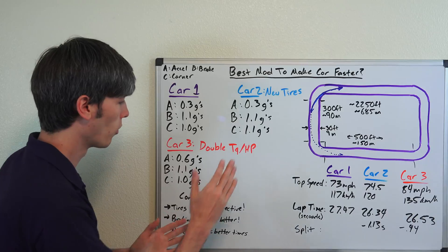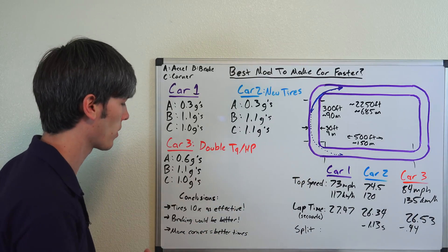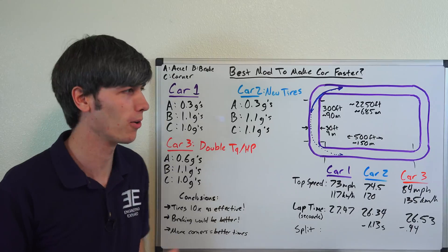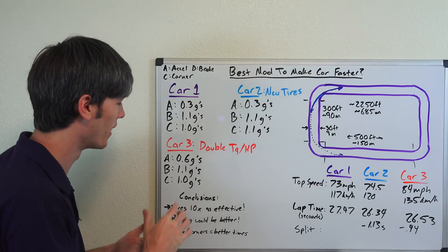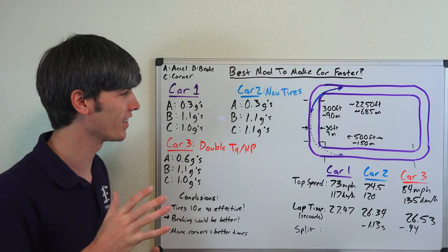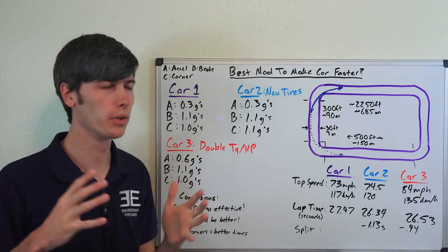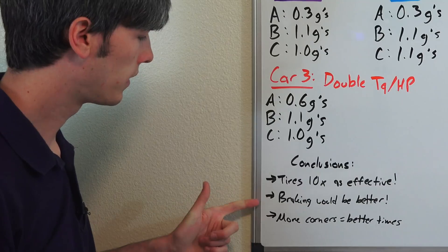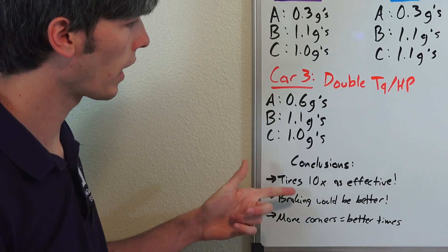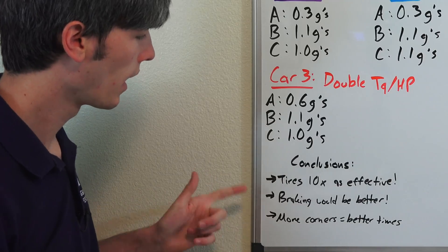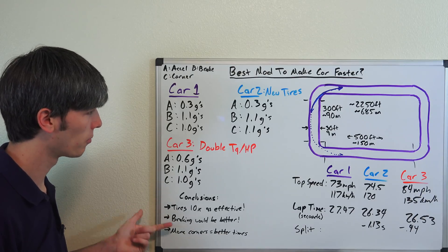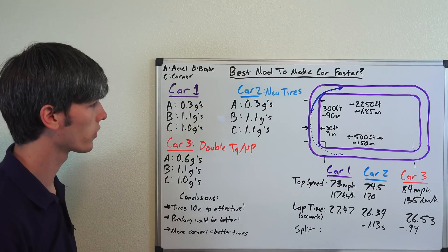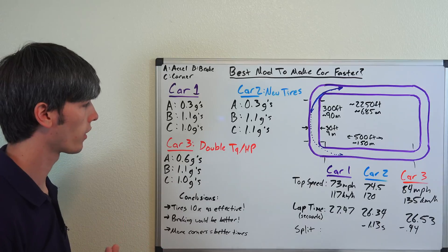So what are our conclusions? Well based on this track, this track right here, tires are ten times as effective as adding power. It's not to say that you shouldn't add power—you definitely should, it makes cars tons of fun—but you should think about tires initially. That's a great first modification and it's really going to improve the way the car handles and how quickly it can corner. Additionally, our braking is going to improve so it would actually be a better time than I've shown here. And one thing to think about is the more corners a track has, the tighter a track it is, the better times you're going to be able to post simply with better tires rather than having more power.